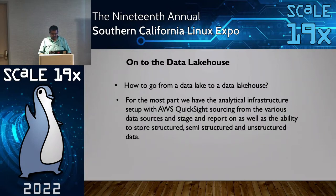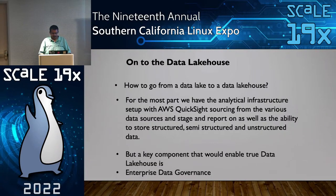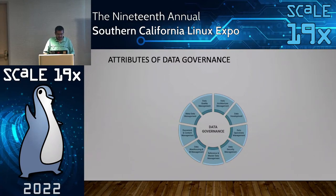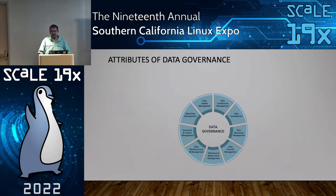How do you go from a data lake to a data lakehouse? For the most part, you have analytical infrastructure in place — QuickSight or Tableau sourcing from various data sources, with the ability to store semi-structured and structured data. But then you need a key component that would enable a true data lakehouse: enterprise data governance. Multiple things come into data governance — data quality management, data architecture, data development, operations, security, metadata management, master data management, and document content management.